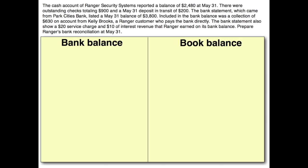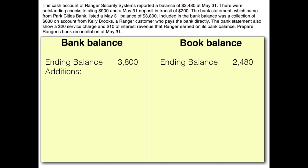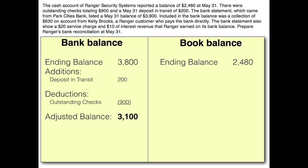It's very important to start correctly. On a bank reconciliation we start with the ending balances — the ending balance from our bank and the ending balance from our books. We're going to adjust that ending balance. Starting with the bank side: things we know about that don't appear on our bank statement yet are deposits in transit. We have $200 in deposits in transit. For deductions, we have outstanding checks of $900. That's all we know that the bank doesn't know about, so our adjusted bank balance is $3,100.